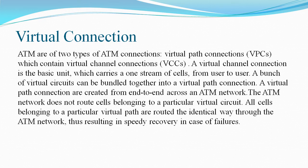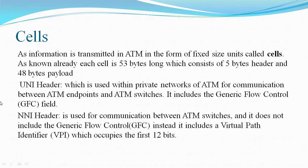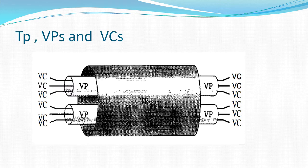Virtual connection. Connection between two endpoints is accomplished through a transmission path, virtual path, and virtual circuits. A transmission path is a physical connection between an endpoint and a switch, or between two switches. A transmission path is divided into several virtual paths. A virtual path provides a connection or a set of connections between two switches. Cell networks are based on virtual circuits. All cells belonging to a single message follow the same virtual circuit and remain in their original order until they reach their destination. The relationship between transmission path, virtual path, and virtual circuit that logically connects two points is given in the figure.